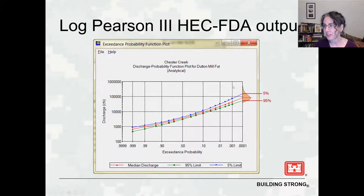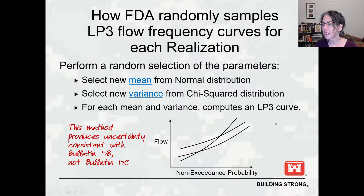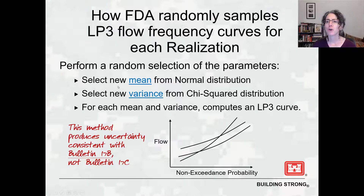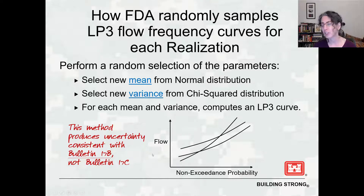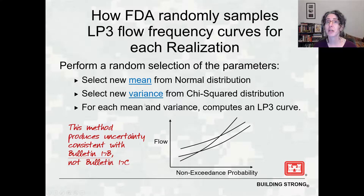After this window is entered, we see exceedance probability versus discharge — the LP3 curve computed with these parameters. Based on the equivalent record length, we get a 90% confidence interval and a 50% confidence interval. Hitting the plot button shows the median curve in red and the 90% confidence interval plotted: a 95% chance the curve is higher than the green, a 5% chance it's higher than the blue, and a 90% chance it's between the two. FDA randomly creates a new LP3 frequency curve for each realization by randomly selecting a new mean and a new standard deviation, then generating a new LP3 curve using those values and the original skew — giving possible frequency curves that are higher, lower, steeper, or less steep than the original, all with the same curvature because skew is unchanged.